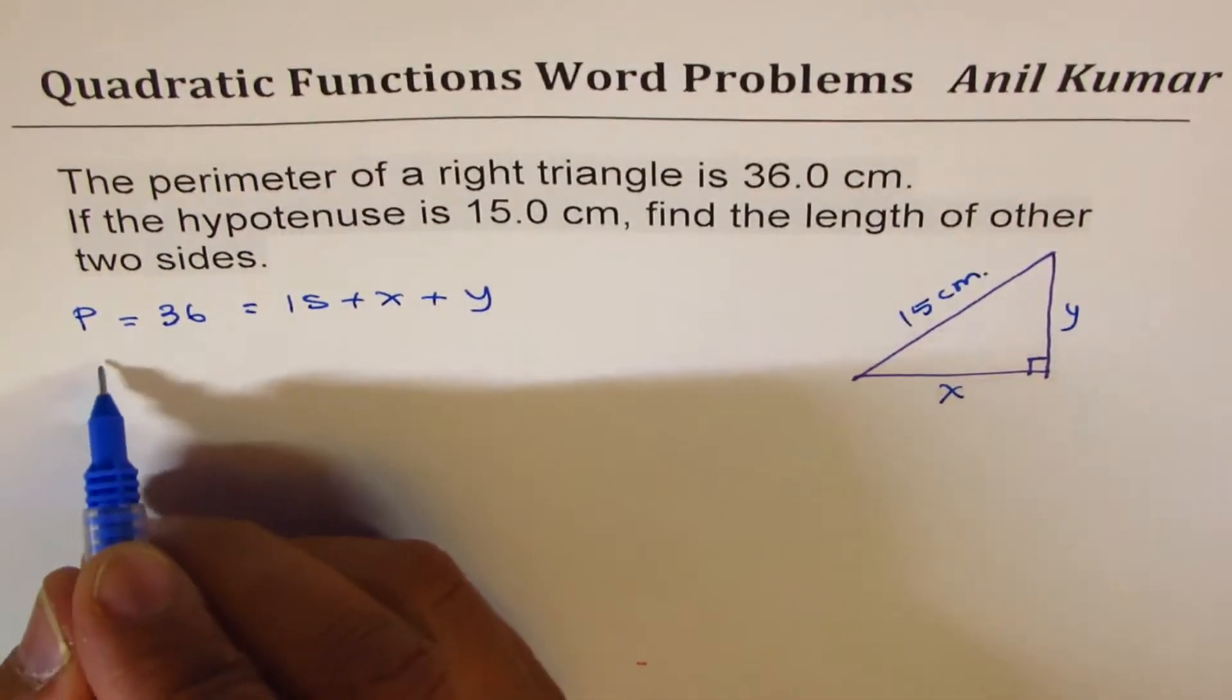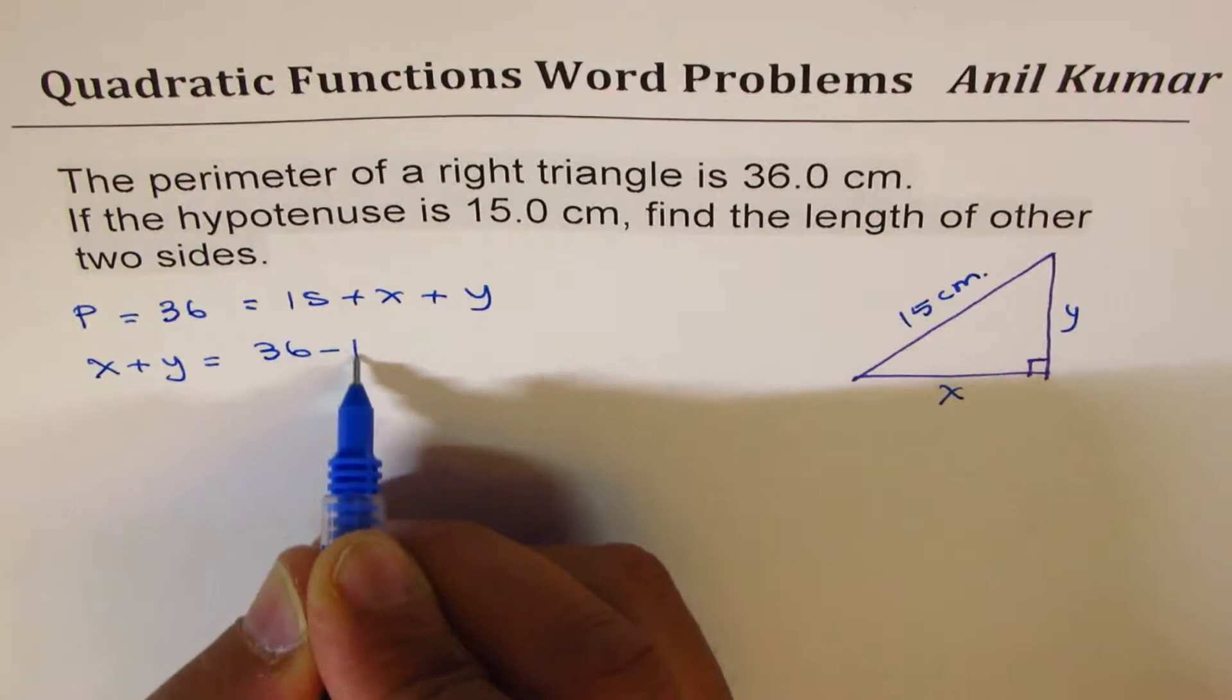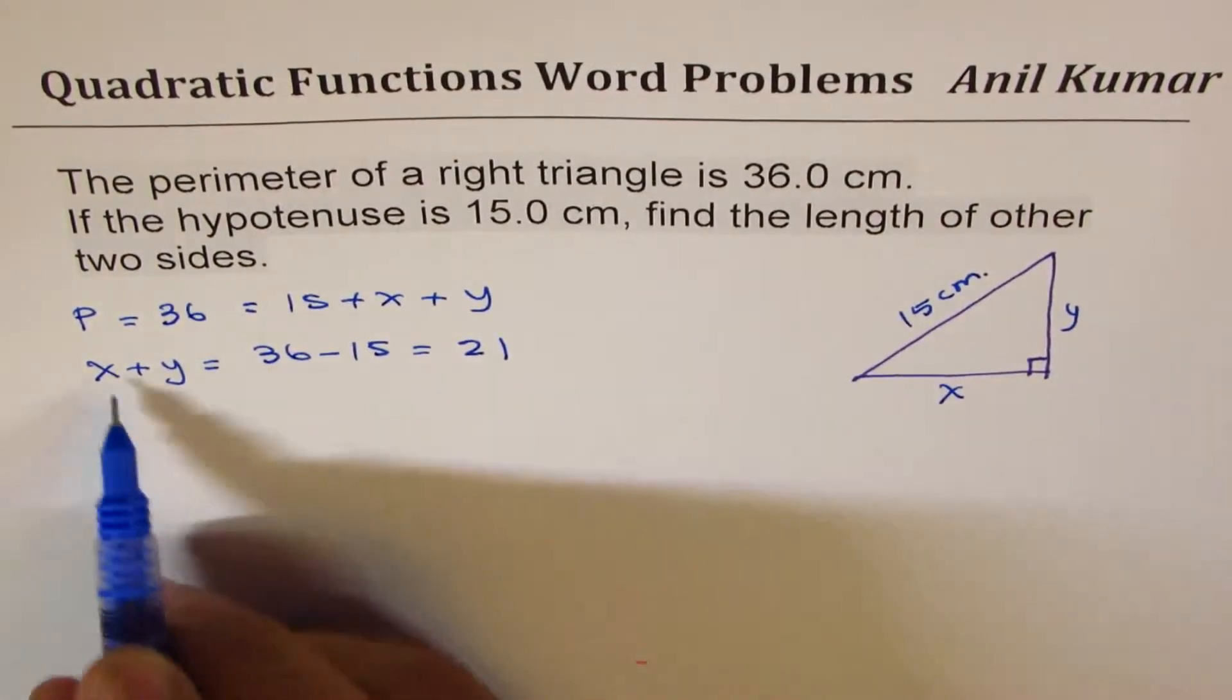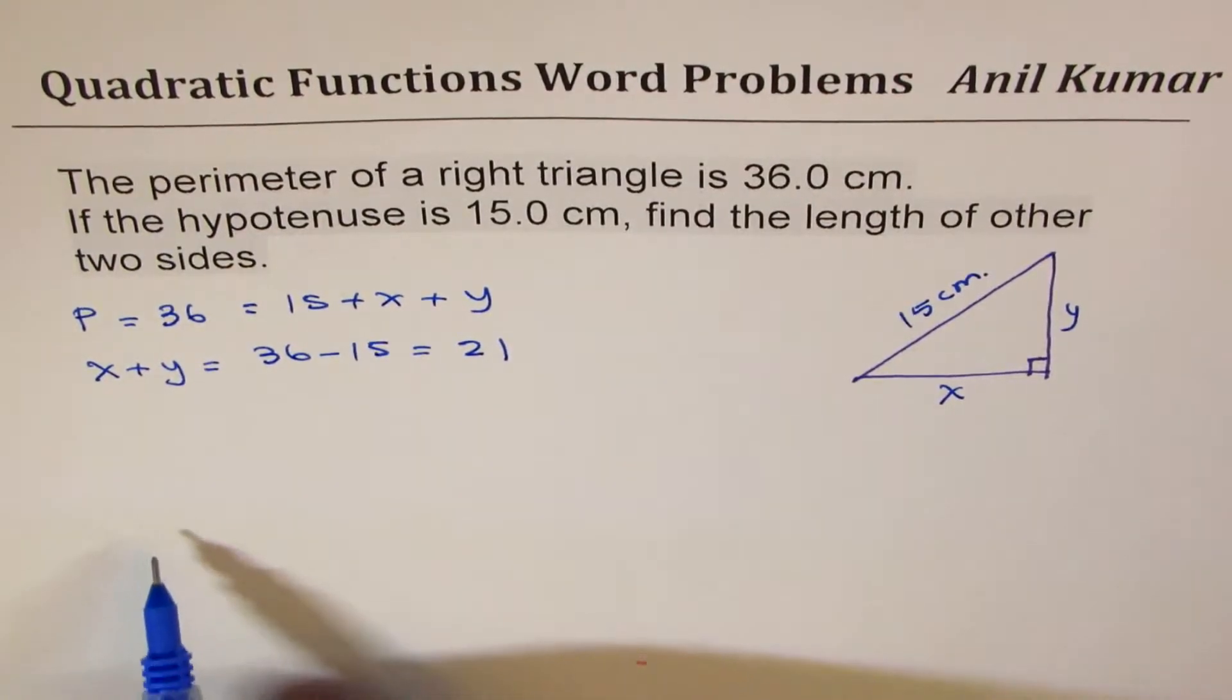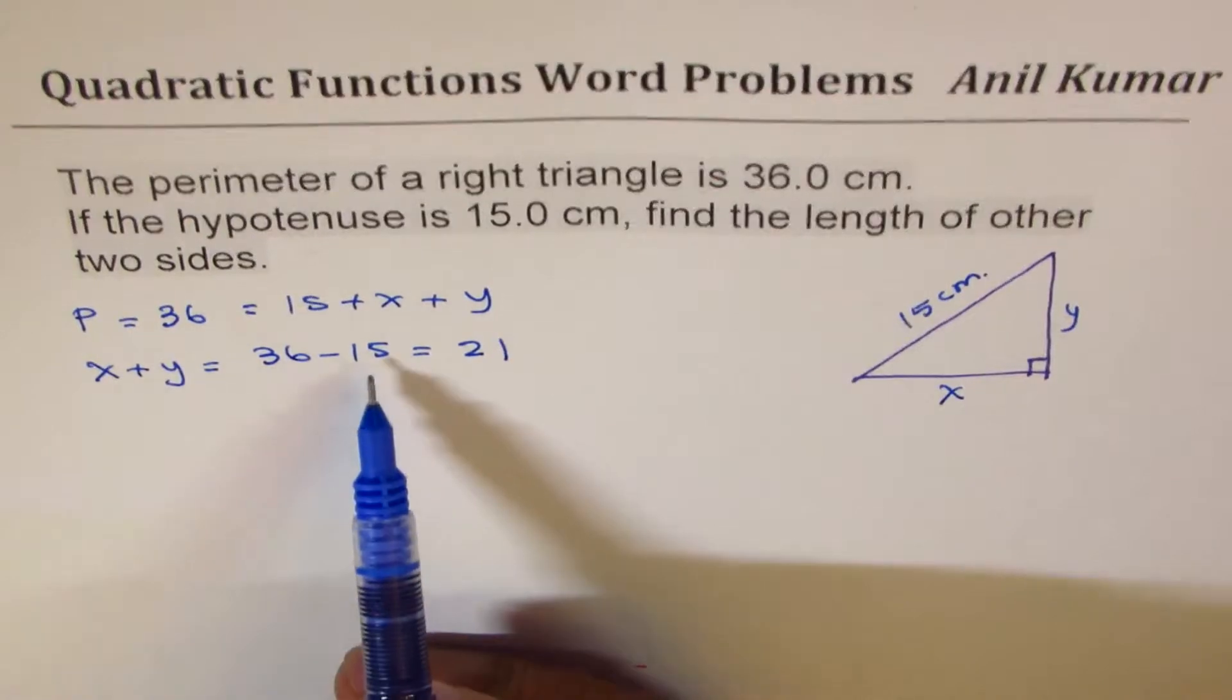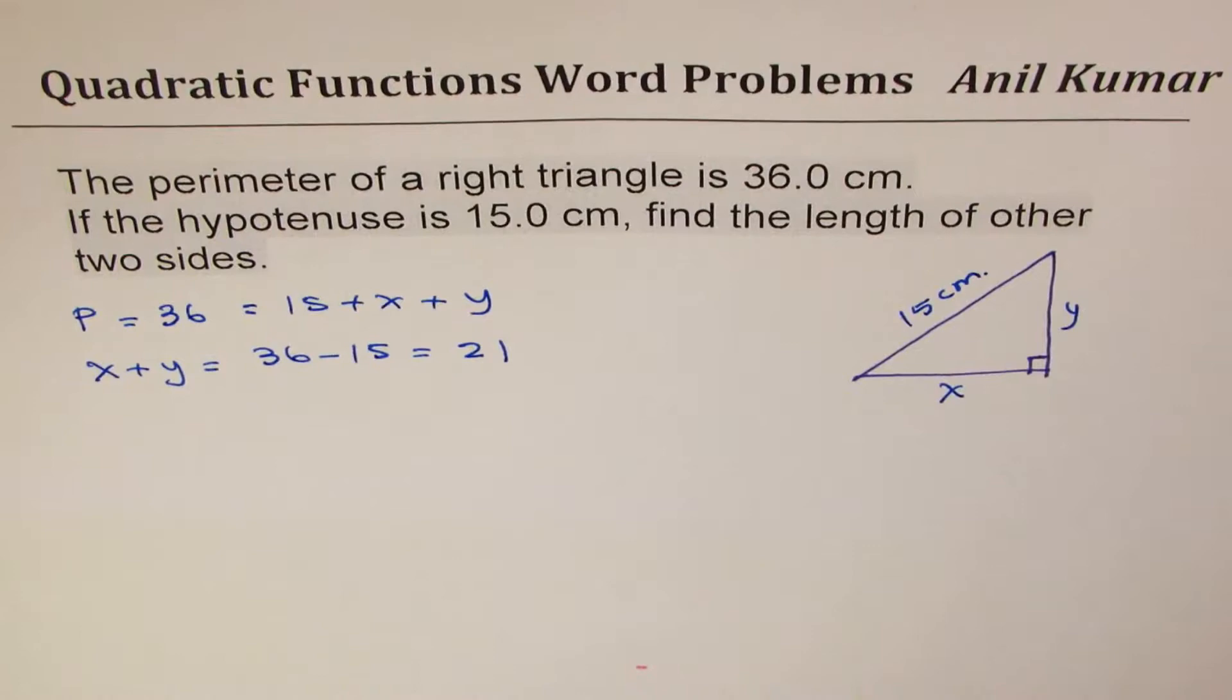We could write X plus Y equals to 36 minus 15 which is 21. So that is a relation. Now we want to find X and Y. We can also relate X and Y with the help of Pythagorean theorem.